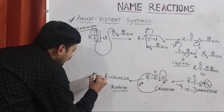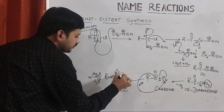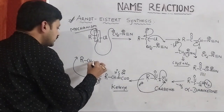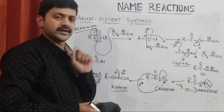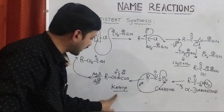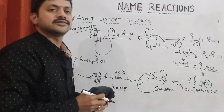This ketene is subjected to hydrolysis in the presence of silver oxide. The pi bond is subjected to cleavage, with H⁺ and OH⁻ added, producing the final compound. This is the mechanism of this particular synthesis. It is very important that everyone should remember: two intermediates are formed in the synthesis — the first intermediate is the carbene intermediate, and the second intermediate is the ketene intermediate. This is the mechanism of Arndt-Eistert synthesis.